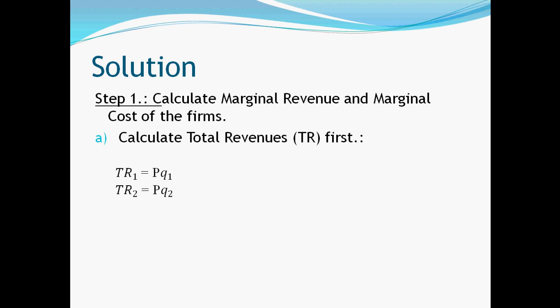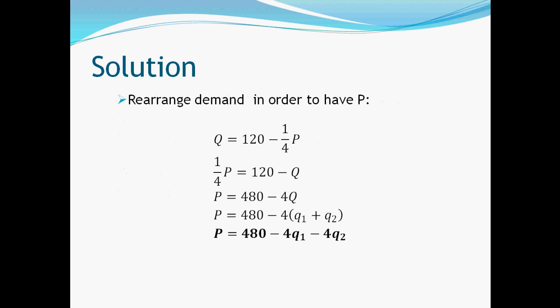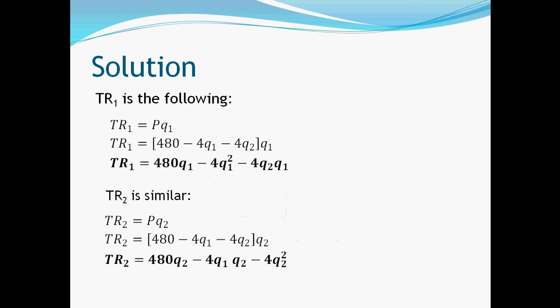As the first step of solving this problem, we should calculate the total revenue function for both firms. We know that total revenue can be calculated as market price multiplied by quantity produced. This is true for the first and the second firm as well. To make this step easier, let's rearrange the market demand function in order to have the price on the left side. Now we can determine the total revenue function — just multiply the rearranged demand function by q1 and q2 respectively.